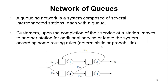A queuing network is a system composed of several interconnected stations, each with a queue. Customers, upon the completion of their service at a station, move to another station for additional service, or leave the system according to some routing rules — deterministic or probabilistic.